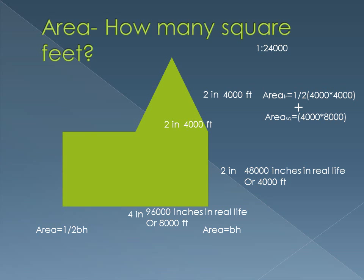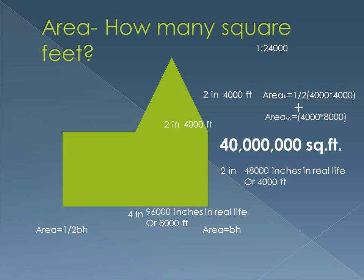Then we're going to add the area of the rectangle. The height is 4,000 feet and the base is 8,000 feet — we know that because we converted from inches to feet. So 4,000 times 8,000 is 32 million square feet.